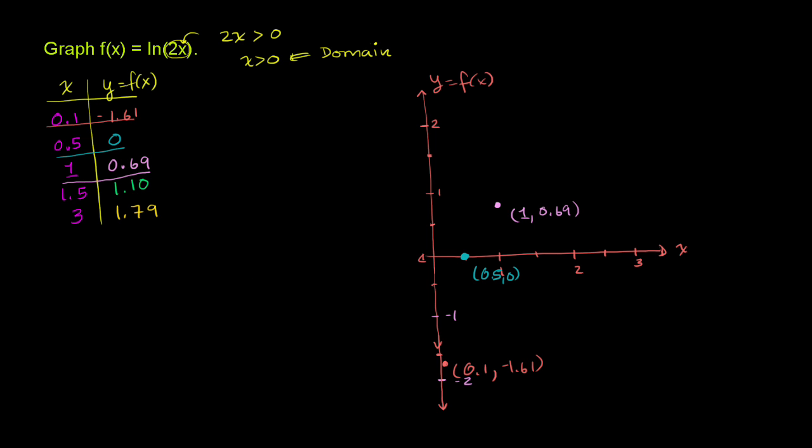And then we have the point, we have 1.5. When x is 1.5, f(x) is 1.1. When x is 1.5, f(x) is 1.1, which sticks us right about there. So that is the point 1.5 comma 1.10. And then finally, when x is 3, y is 1.79. When x is 3, y is 1.79. So a little bit closer to 2 than 1.5, so it's going to be right about there. It's going to be the coordinate 3, 1.79.